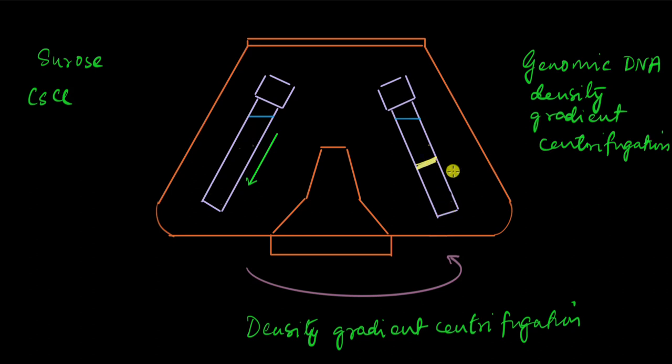Even though DNA is heavier than water, it still settles here because there is a density gradient. Usually the substance used is cesium chloride, so there is this gradient, and the DNA will go and settle at that point where the density of the solution matches the density of the DNA.